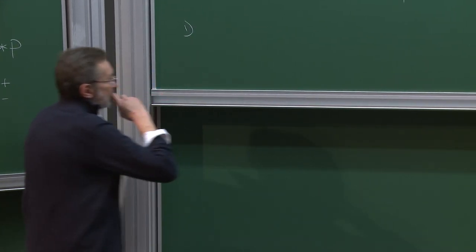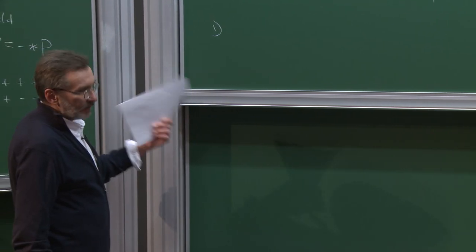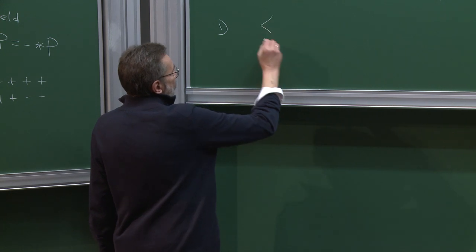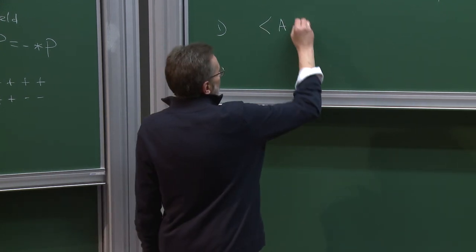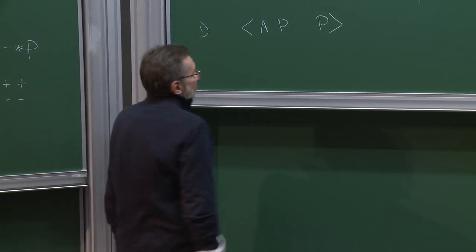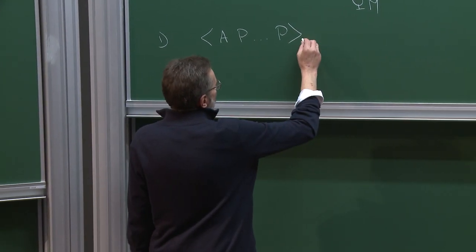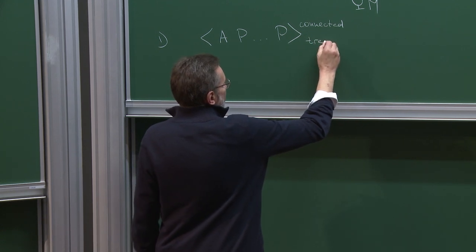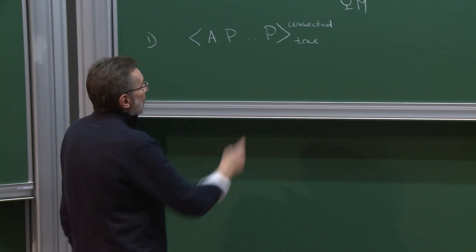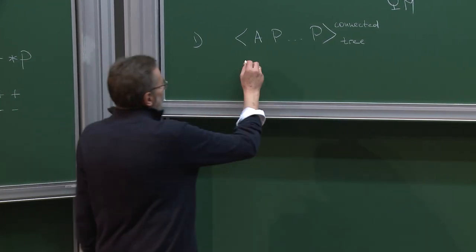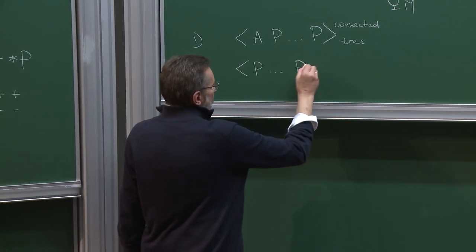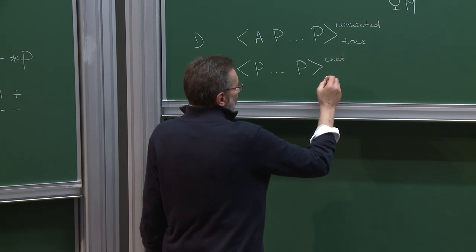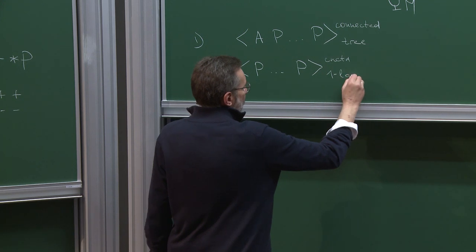Let me list the only non-vanishing correlation functions; all others vanish. If you consider a correlation function of one field A and several fields P, and take the connected part at tree-level Feynman diagrams, this can be non-zero. Another non-vanishing case is when we consider several fields P inserted at different points, take the connected part at one loop. All others vanish.